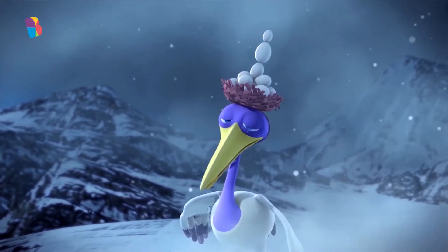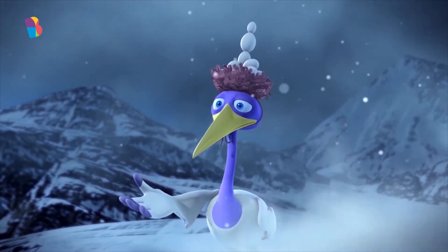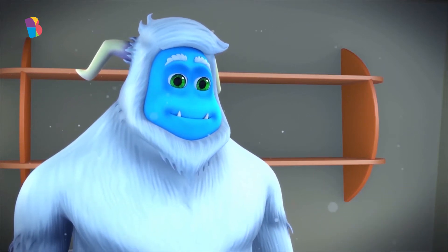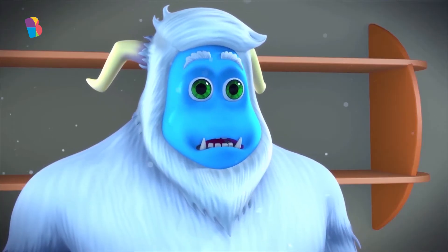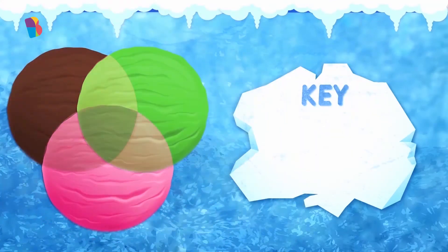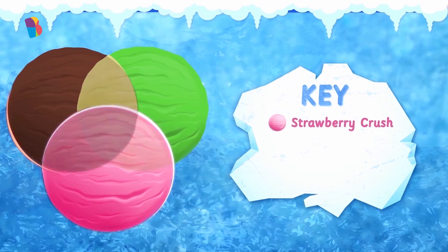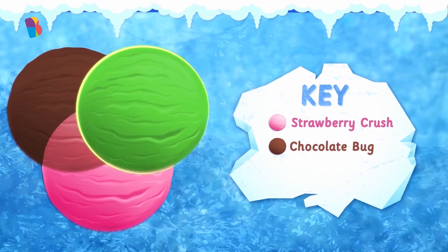I know. And guess what? Before I left, I wanted to offer you some help. Why, that's nice of you. Here, look. I made a handy chart to help you out with your best flavors. As you can see, my furry friend, this Venn diagram will be all you need. The pink circle is for the strawberry crush ice cream. The brown circle is for the yummy chocolate bug ice cream. And the lime green circle is for the slimy lemon ice cream.